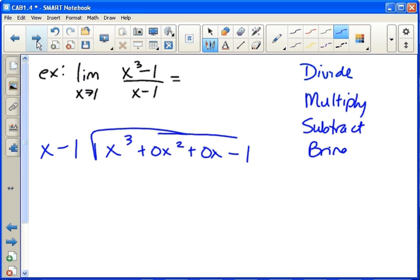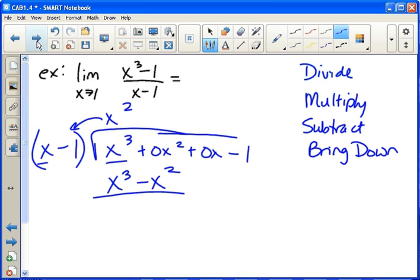So first we divide. We do x cubed divided by x. x cubed divided by x would be x squared. Now we multiply. We do x squared times x minus one. So x squared times x is x cubed. x squared times negative one is negative x squared.